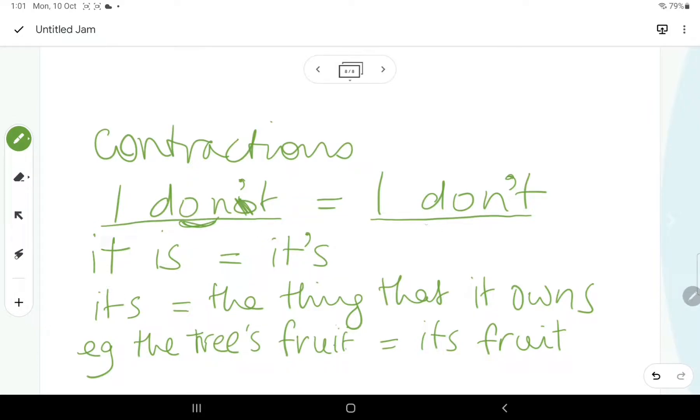So, I do not becomes I don't. That's when you use an apostrophe. Similar story with it is. It gets shortened to it apostrophe S. It's.